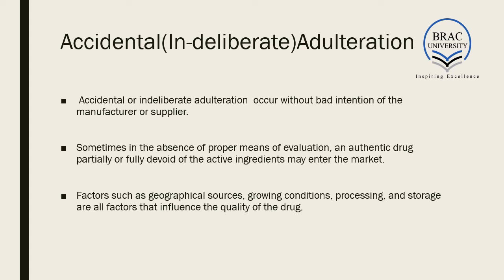Factors such as geographical source, growing conditions, processing, and storage are all very important. When they are not properly maintained, they influence the quality of the drug. We term this accidental adulteration because the manufacturer and supplier did not have any bad or ill intention of adulteration.